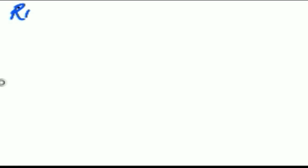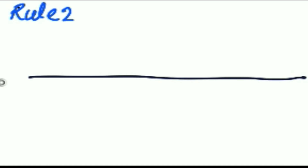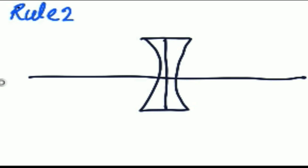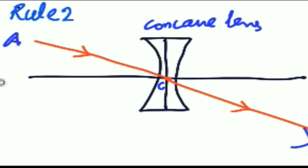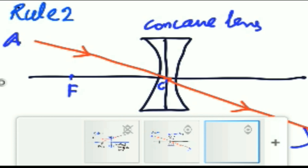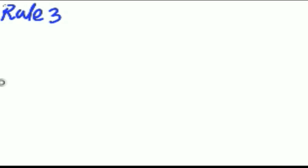Rule number two is very simple and we have already learned it: a ray that falls directly on the optical center of a lens passes straight through after refraction without any deviation. We discussed this earlier for the convex lens, and in the case of the concave lens it is the same. This rule is universal and it applies to all lenses.